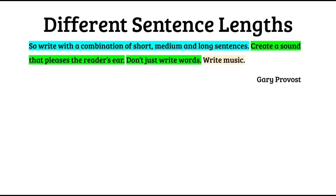So in this example, what Gary Provost is trying to show us is that just by changing the length, you can create a lilt and a rhythm to your writing. And as you are careful with the way you build up your short, medium and long sentences, you can draw attention to the most important part of your writing. This is not just about sentence length — you can consider your paragraph length as well.